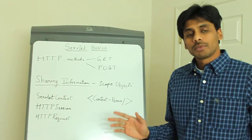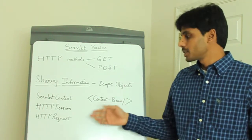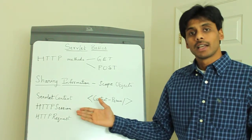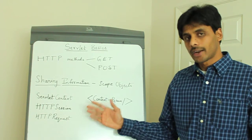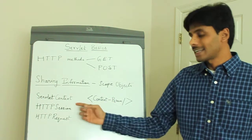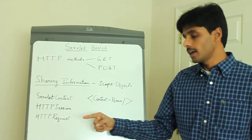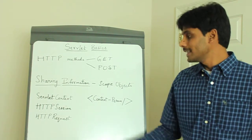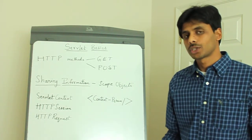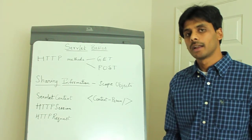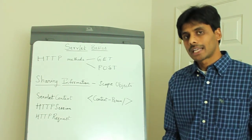Your servlets and JSPs within a web application can share information using the various classes that your web container provides them with at runtime, like the servlet context, HTTP session, and HTTP request. These are the interfaces which your servlet container like Apache Tomcat will implement and provide your servlet class with at runtime.